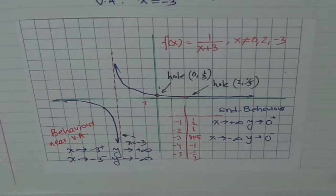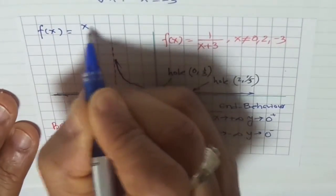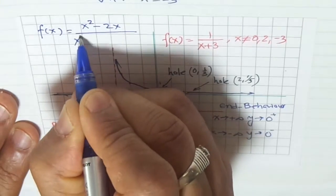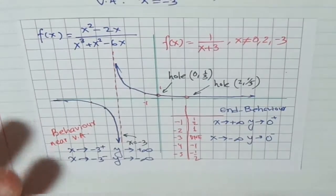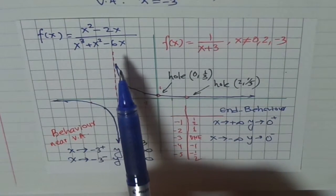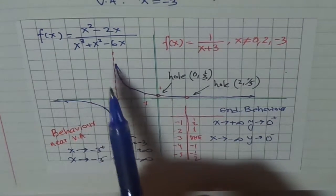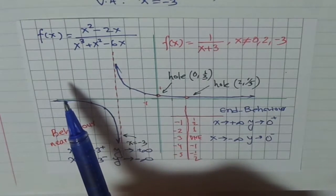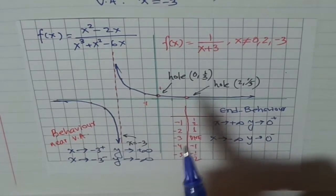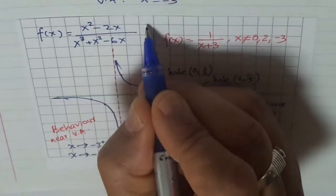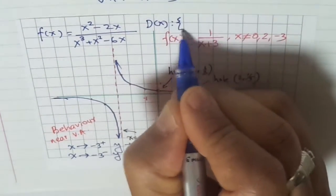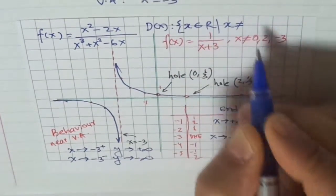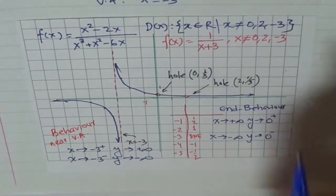Let me summarize what we did. We started with f(x) equals (x squared minus 2x) over (x cubed plus x squared minus 6x). The first step is always to find the discontinuities and therefore the domain of the function. We found those by factoring and equating the denominator to 0, which gave us the points that do not belong to the domain: 0, 2, and minus 3. So the domain is all real numbers where x is not equal to 0, 2, and minus 3.